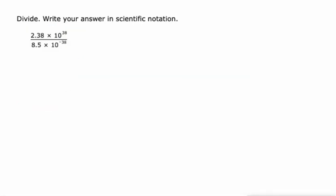Let's do one more. Same process. Take these first factors and divide them. 2.38 divided by 8.5. Yes, I'm using a calculator. It's 0.28. Some people might get confused here by 10 to the 38th divided by 10 to the negative 38th. They might think those cancel out. But they're not the same. They're opposites. So this is actually 10 to the 38th plus 38th, which is 76th. So 0.28 times 10 to the 76th.